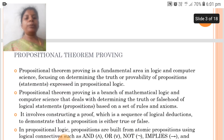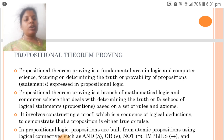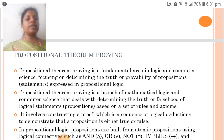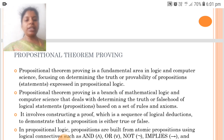Propositional Theorem Proving is a fundamental area in logic and computer science focusing on determining the truth or falsehood of propositions expressed in propositional logic. It is a branch of mathematical logic that deals with determining the truth or falsehood of logical statements based on a set of rules and axioms. It involves constructing a proof, which is a sequence of logical deductions to demonstrate that a proposition is either true or false.